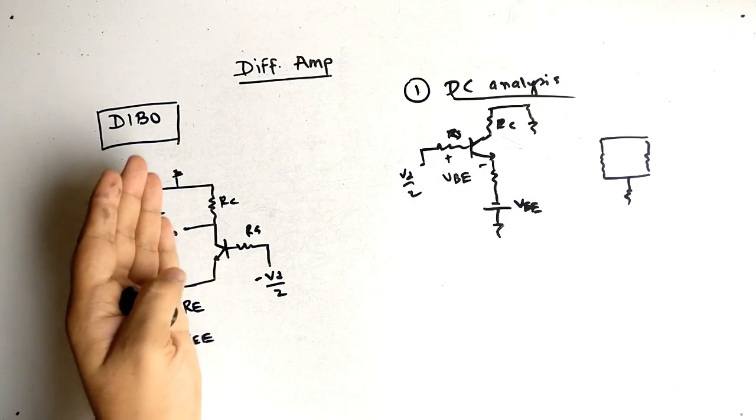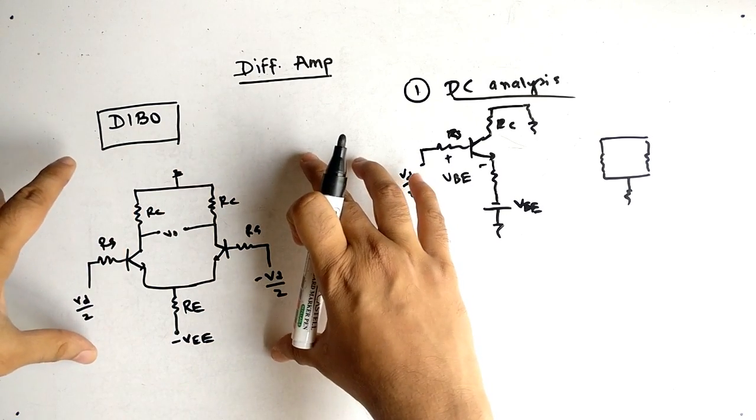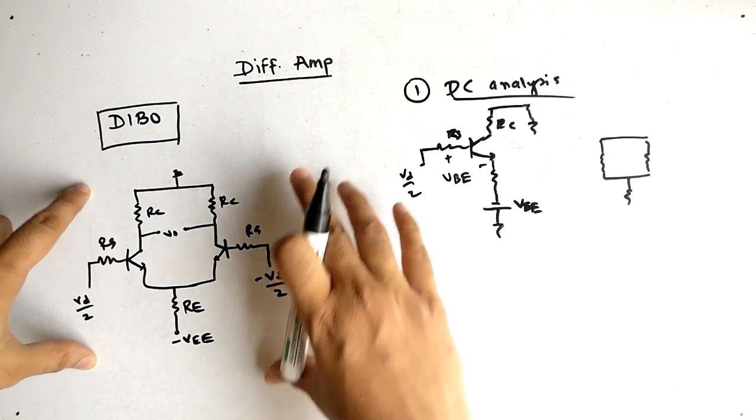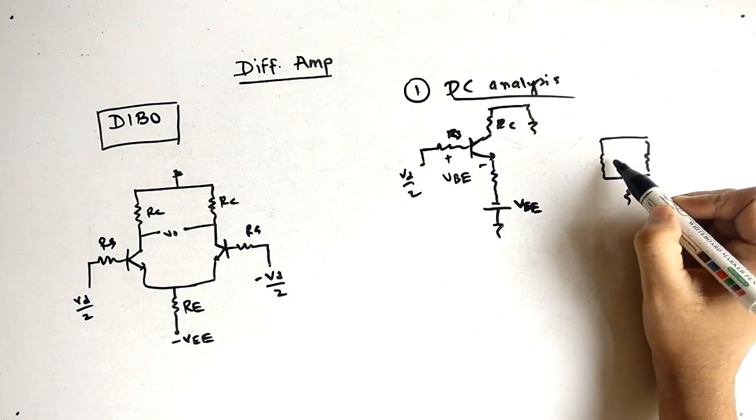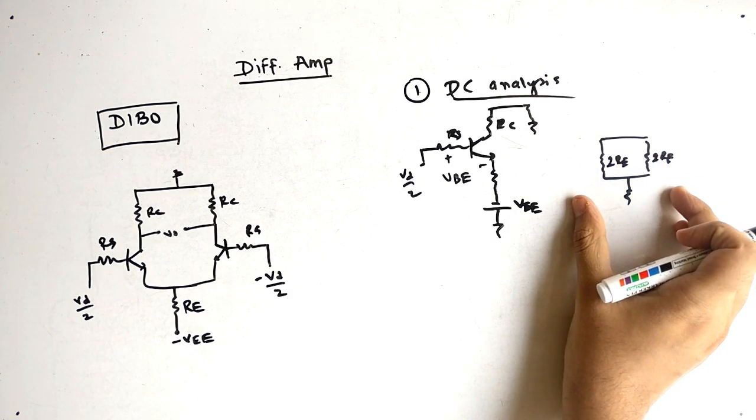For this circuit we will have one RE, for this circuit we will have one RE, because we are breaking from the middle. So we have two BJT, we have two circuits.